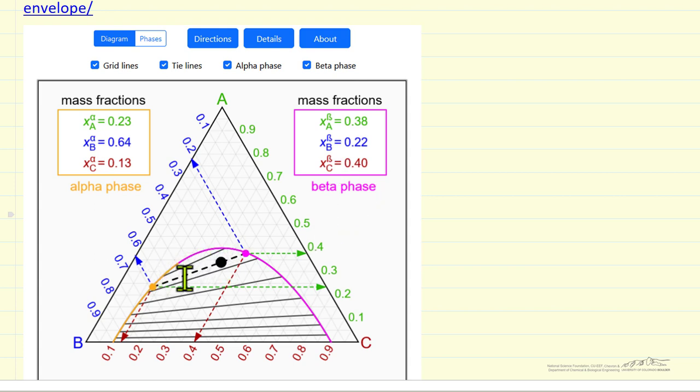If I move this black dot along the dashed black line, I don't change the compositions. This is a tie line. What I change is how much we have of each phase.